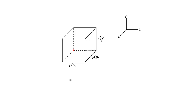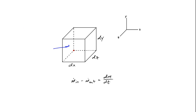All the continuity equation is is a statement of conservation of mass. We can say that the mass flow into the cube minus the mass flow out of the cube equals the rate at which mass within the cube changes with respect to time. If mass flows in but none flows out, the mass inside increases with time; if mass leaves more quickly than it flows in, the mass inside decreases. Let's start with mass flowing in from the left side and out through the right side — here's the x component of velocity.